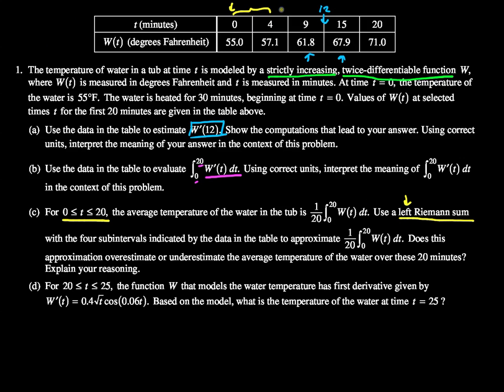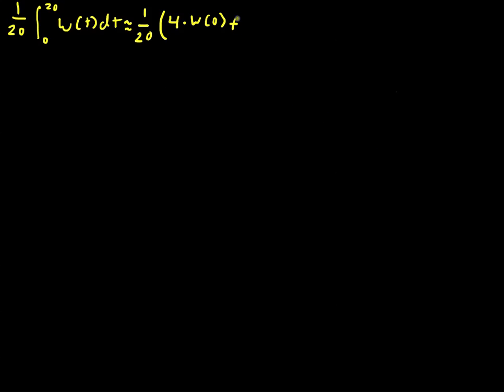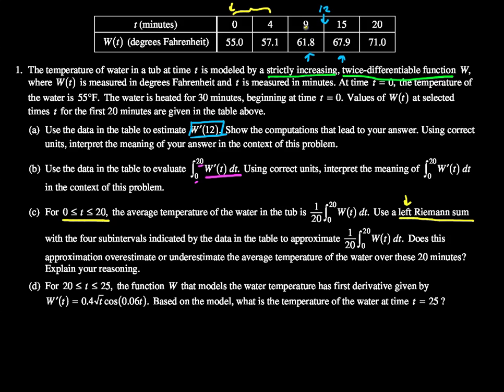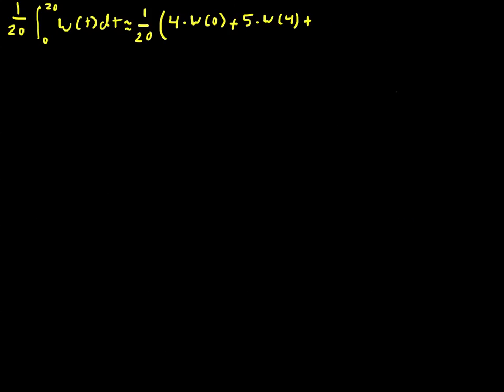We'll have 4 total. The second rectangle is 5 wide from 4 to 9, and we find the height of that rectangle by a value of W of 4. So 5 multiplied by W of 4, plus our third rectangle is 6 wide.